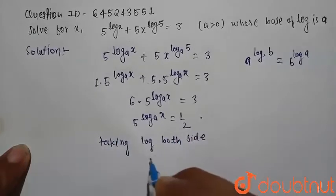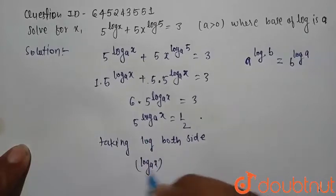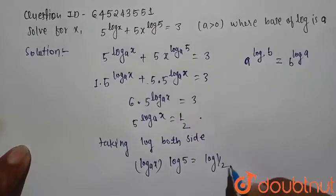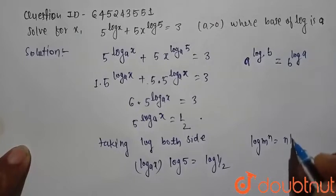We can write that is log a x into log 5 into log 5 equals log 1 by 2. Why? Because we know that log m raised to power n can be written n into log m.